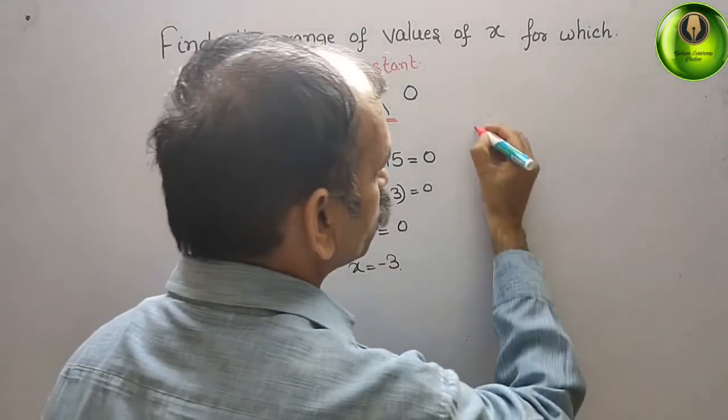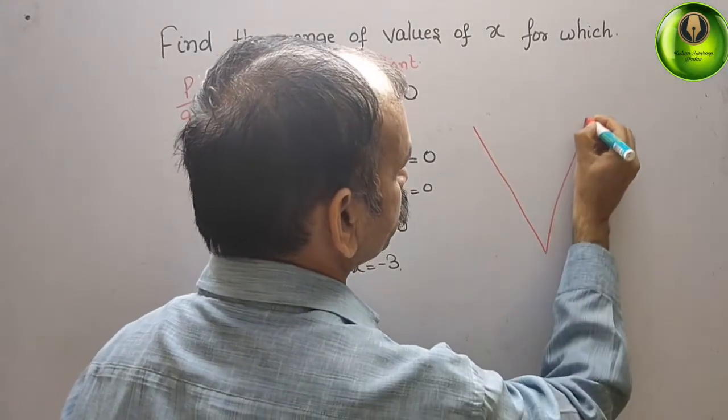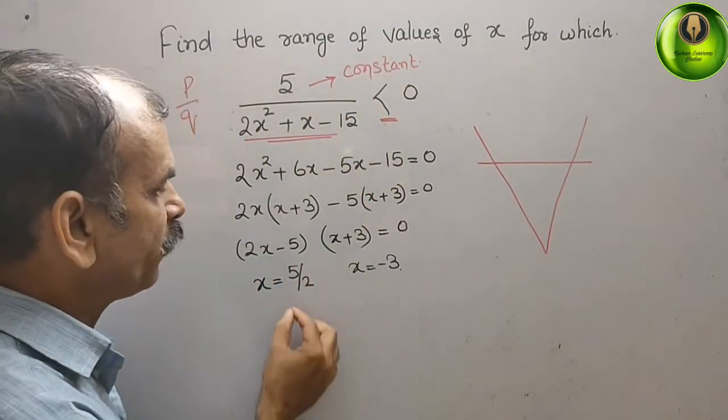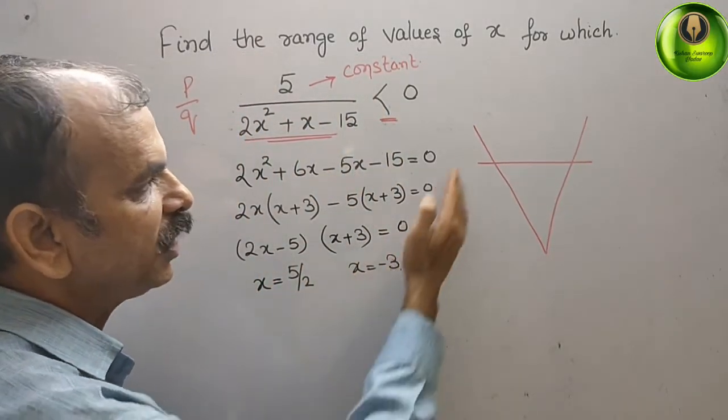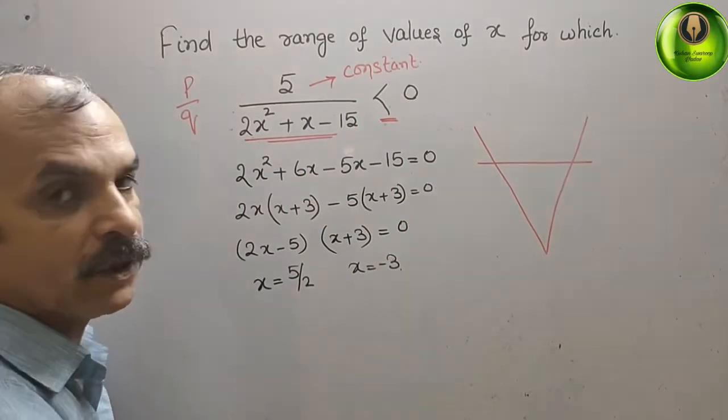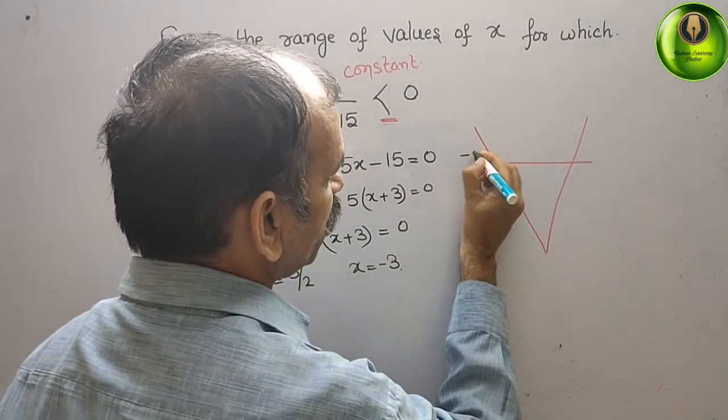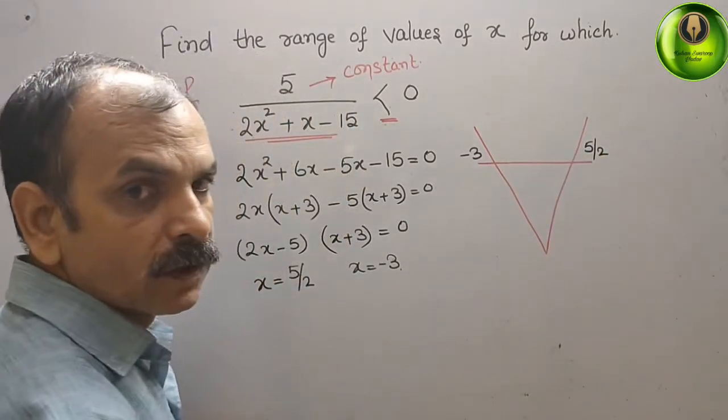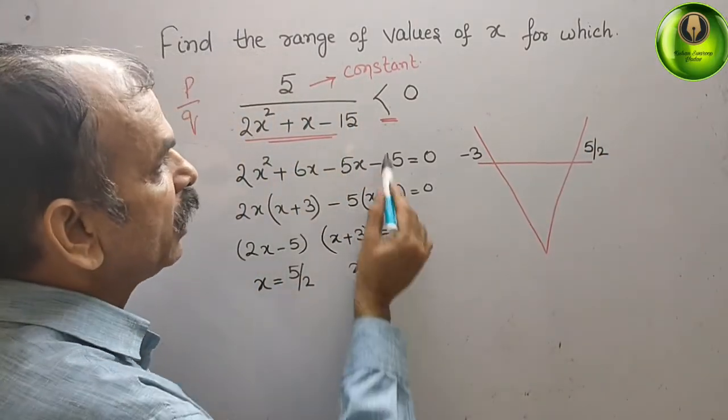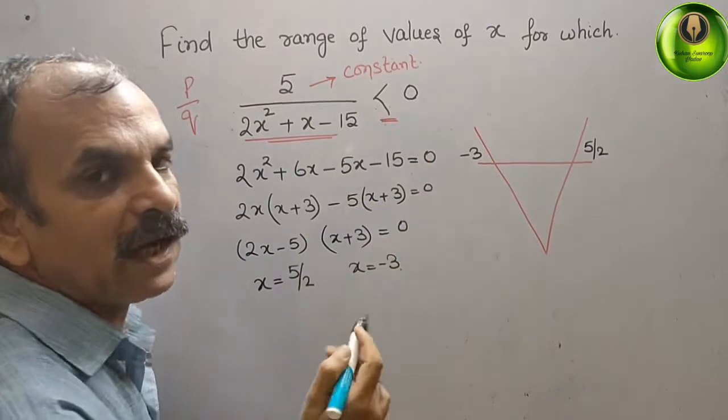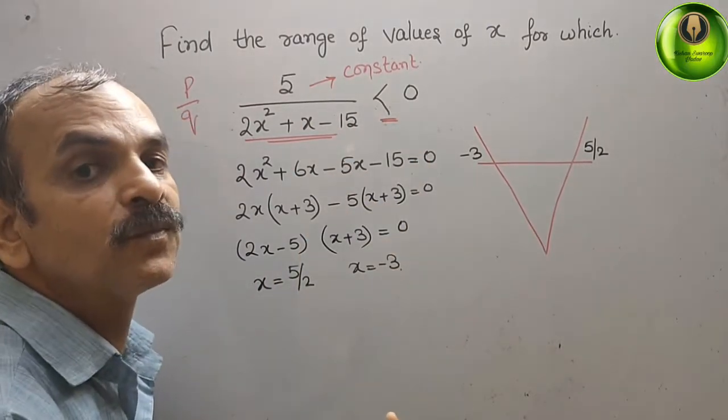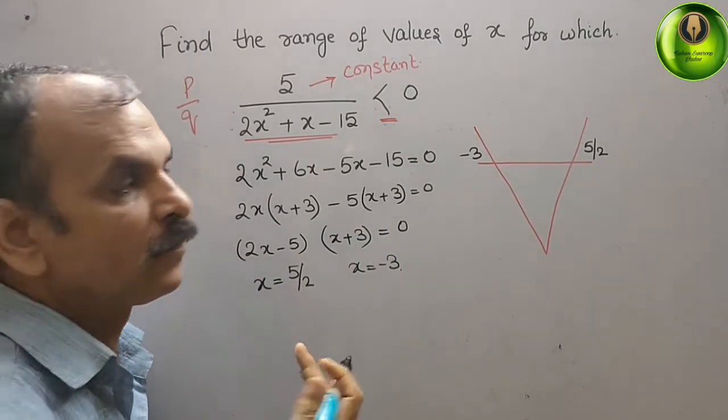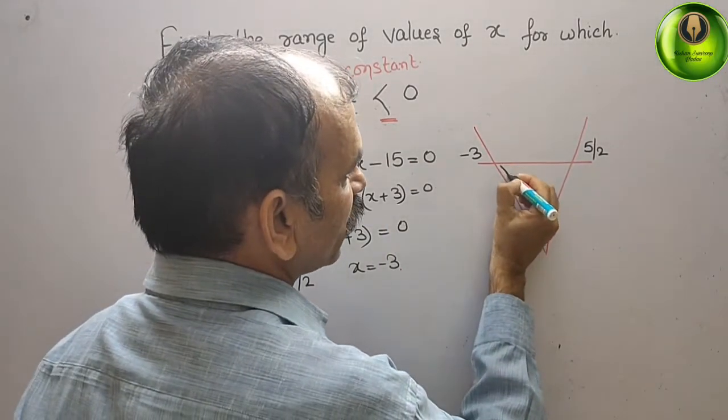Therefore the parabola should be like this. Put the value of x there. You can see -3 is left of 5/2. So here comes -3, and here comes 5/2. Now they have given less than 0, that means we have to move towards the negative side. So negative side is this way, down.